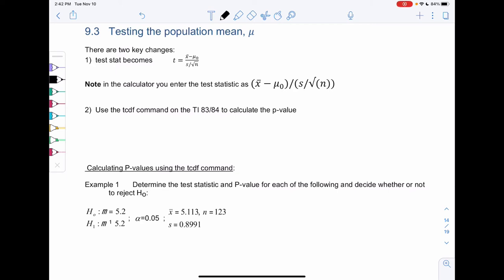Section 9.3, testing the population mean mu. It's going to be very similar to proportions, we just have two changes. Just like for confidence intervals, we used a t-score. So instead of a z-score, we'll use t.